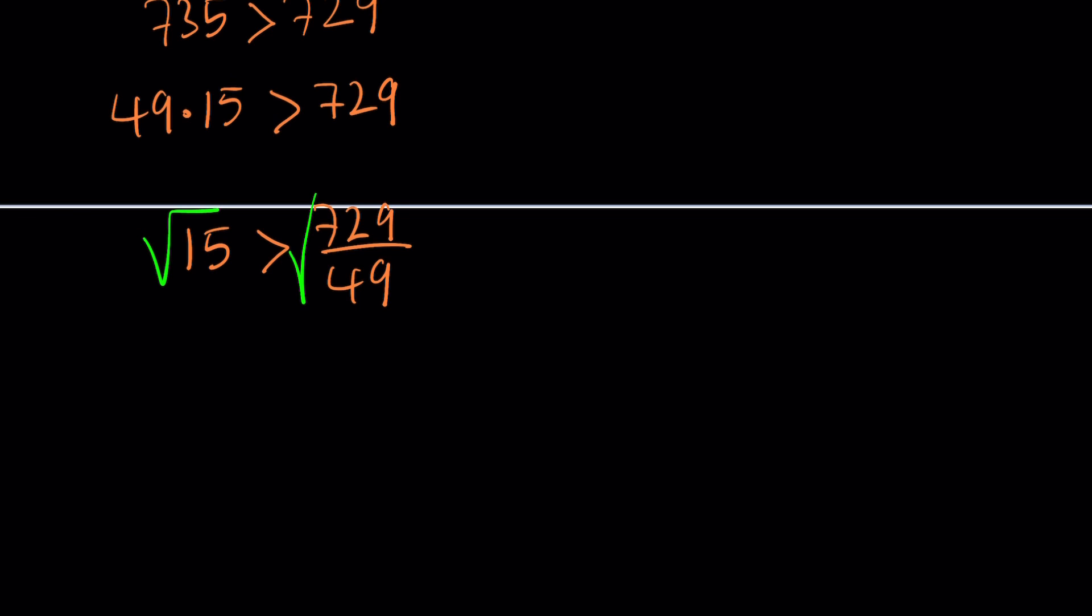If we do take the square roots, we get something super duper nice. We get square root of 15 is greater than the square root of 729, which is 27 divided by 7. This is nice, isn't it? But how can we use it?